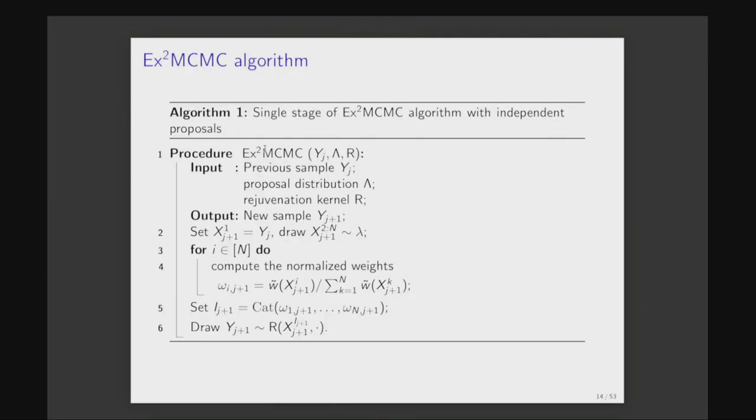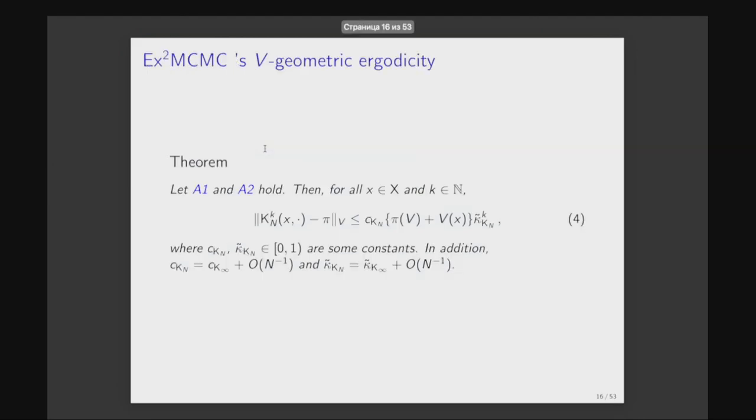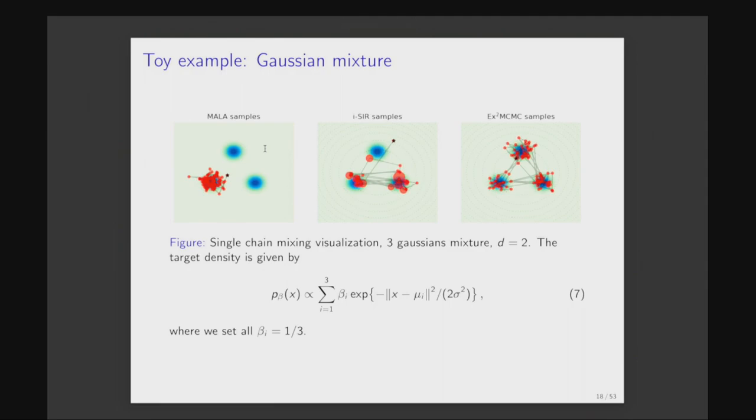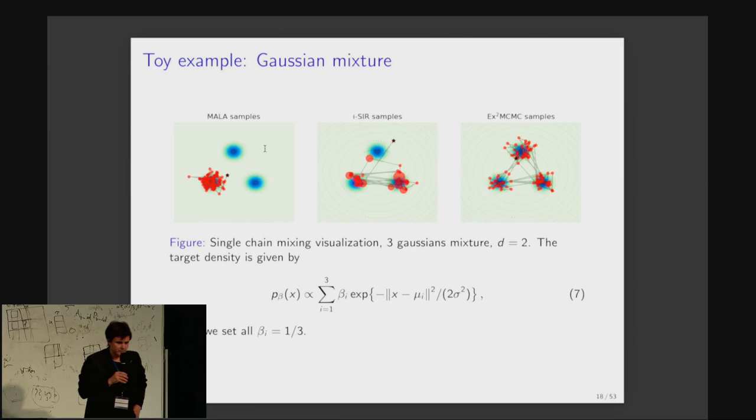The idea of the local-global sampler, in fact, is very simple. You just combine the two Markov kernels, one which corresponds to some global moves over the distribution support, and one which corresponds to local moves, for example, in practice you will take most likely some diffusion-based sampler or Hamiltonian Monte Carlo or something like this. Compared to ISIR, the algorithm is very simple. After you apply one step of ISIR, you just apply, for example, one or some consecutive number of local MCMC samplers, for example, based on Langevin dynamics.